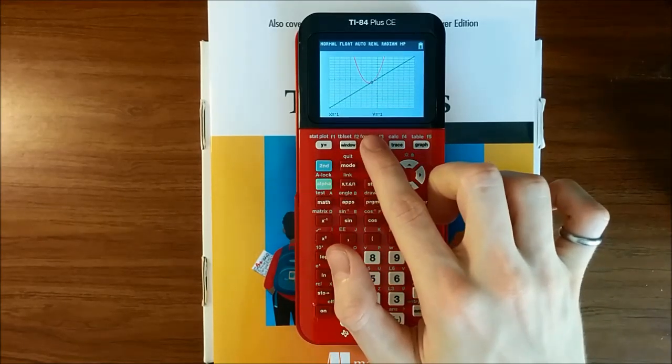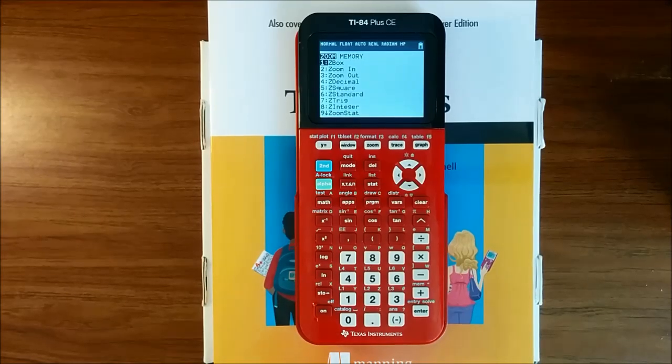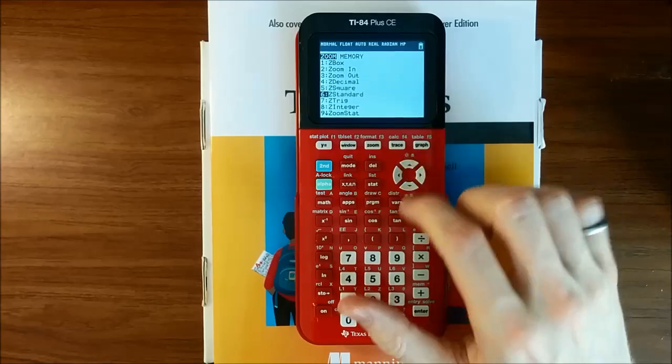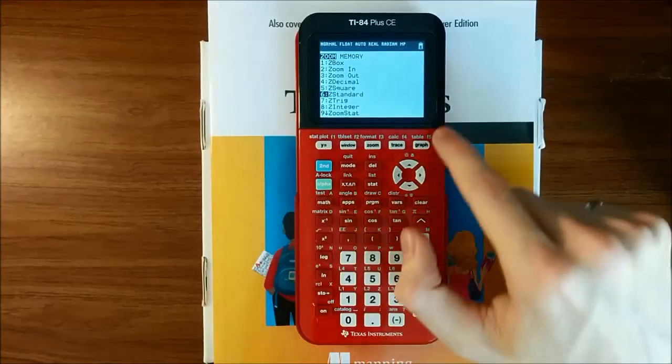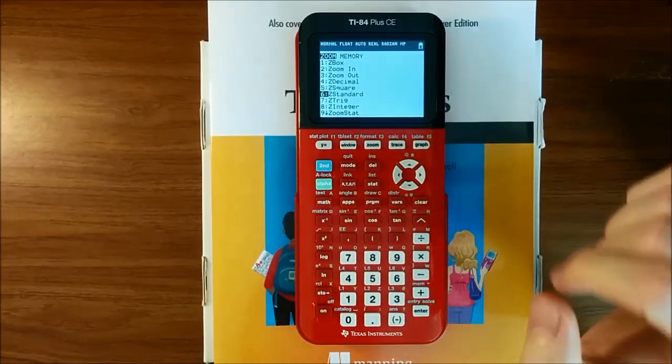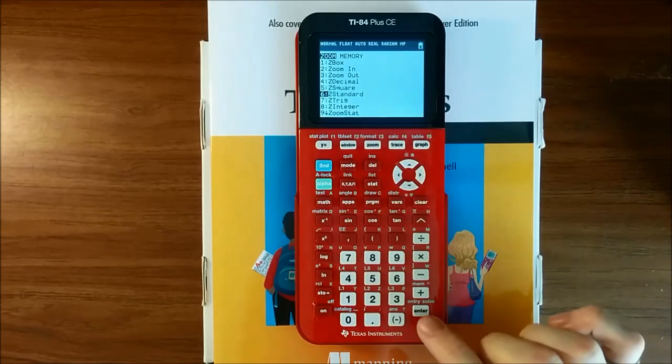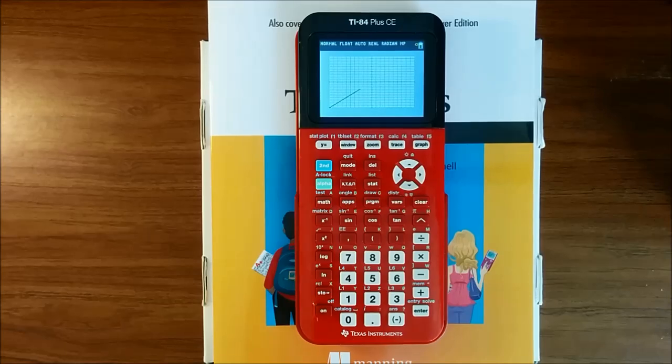Another thing we can do is reset to the default zoom, the zoom called zoom standard, that the calculator always starts with, where x equals, x min equals negative 10, x max equals 10, y min equals negative 10, and y max equals 10. So we'll go down to zoom standard in the zoom menu, and press enter. The calculator resets the standard zoom coordinates that I just mentioned, and redraws the graphs.